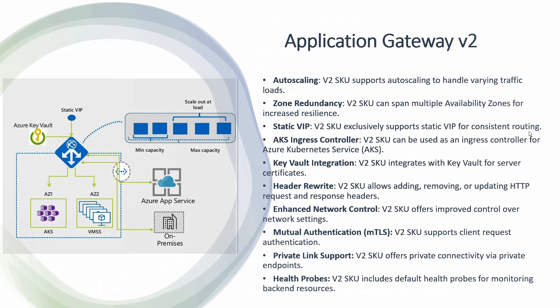There are two versions of Application Gateway in Azure: version 1 and version 2. Version 2 supports more features and Microsoft now recommends deploying version 2 instead of version 1, and migrating existing version 1 deployments to version 2. Version 2 supports auto scaling, zone redundancy, static virtual IP, and AKS ingress controller. Version 2 also supports Key Vault integration, meaning certificates used for TLS authentication can be stored in Key Vault for more efficient rotation and certificate management.